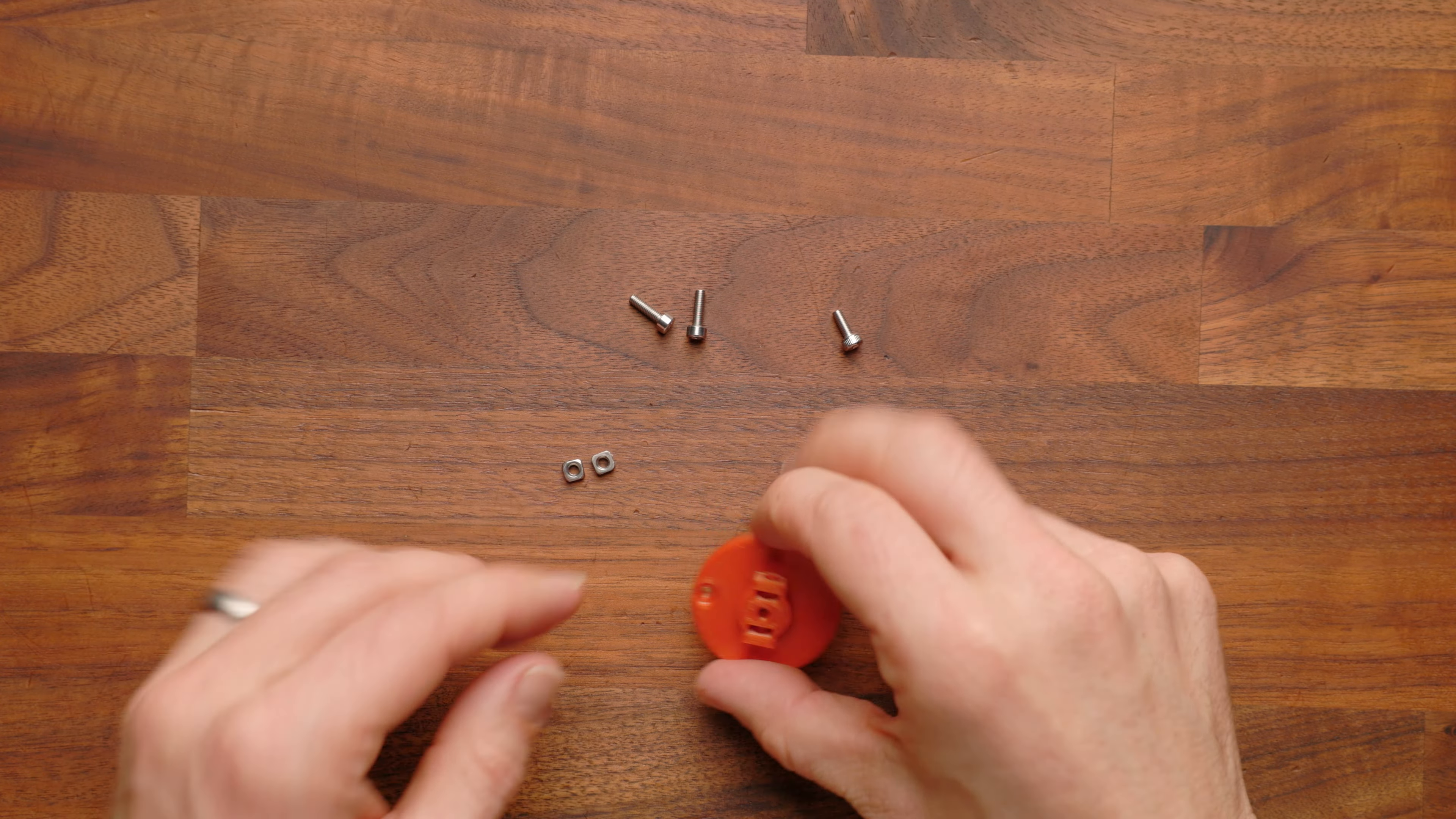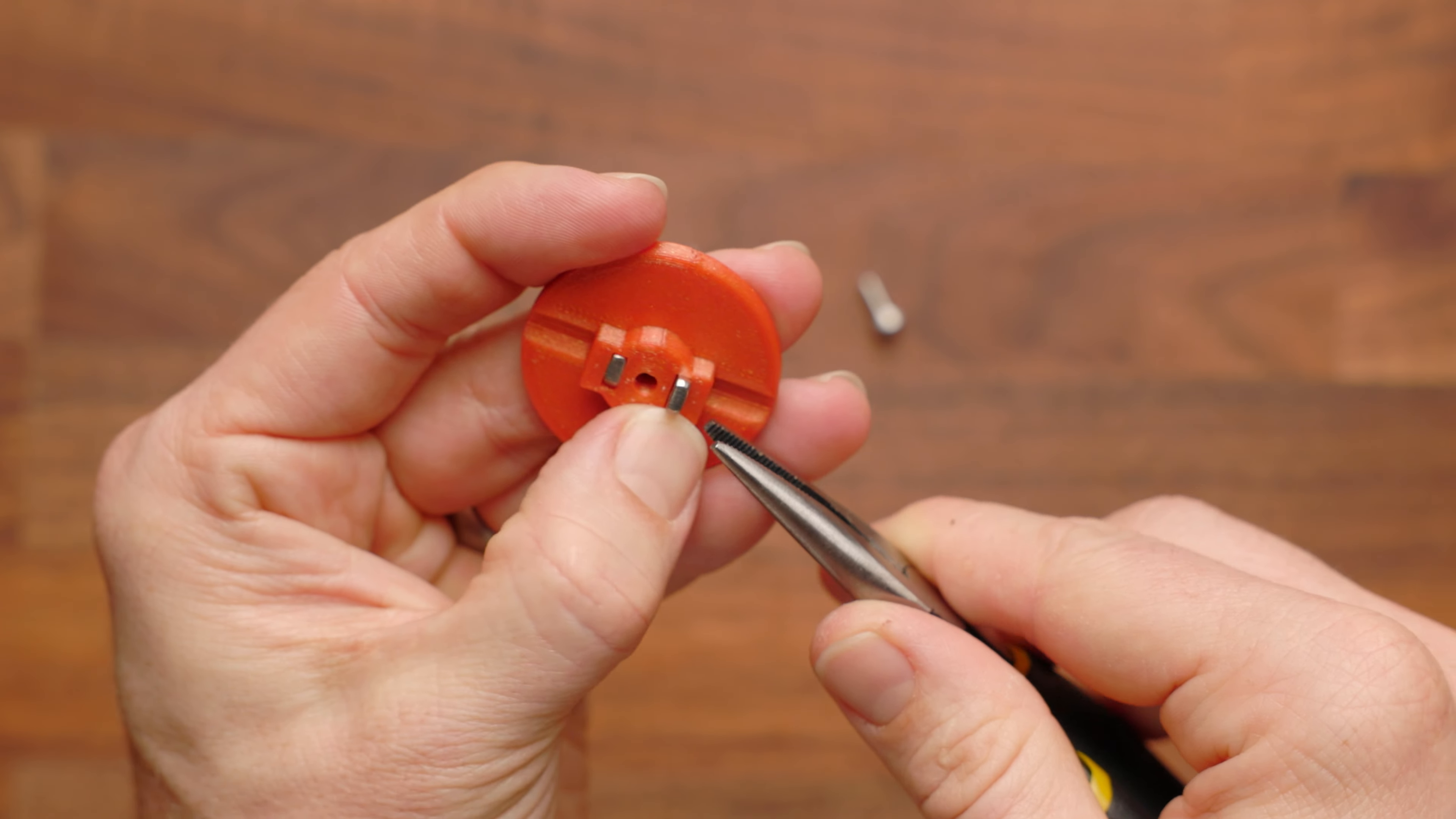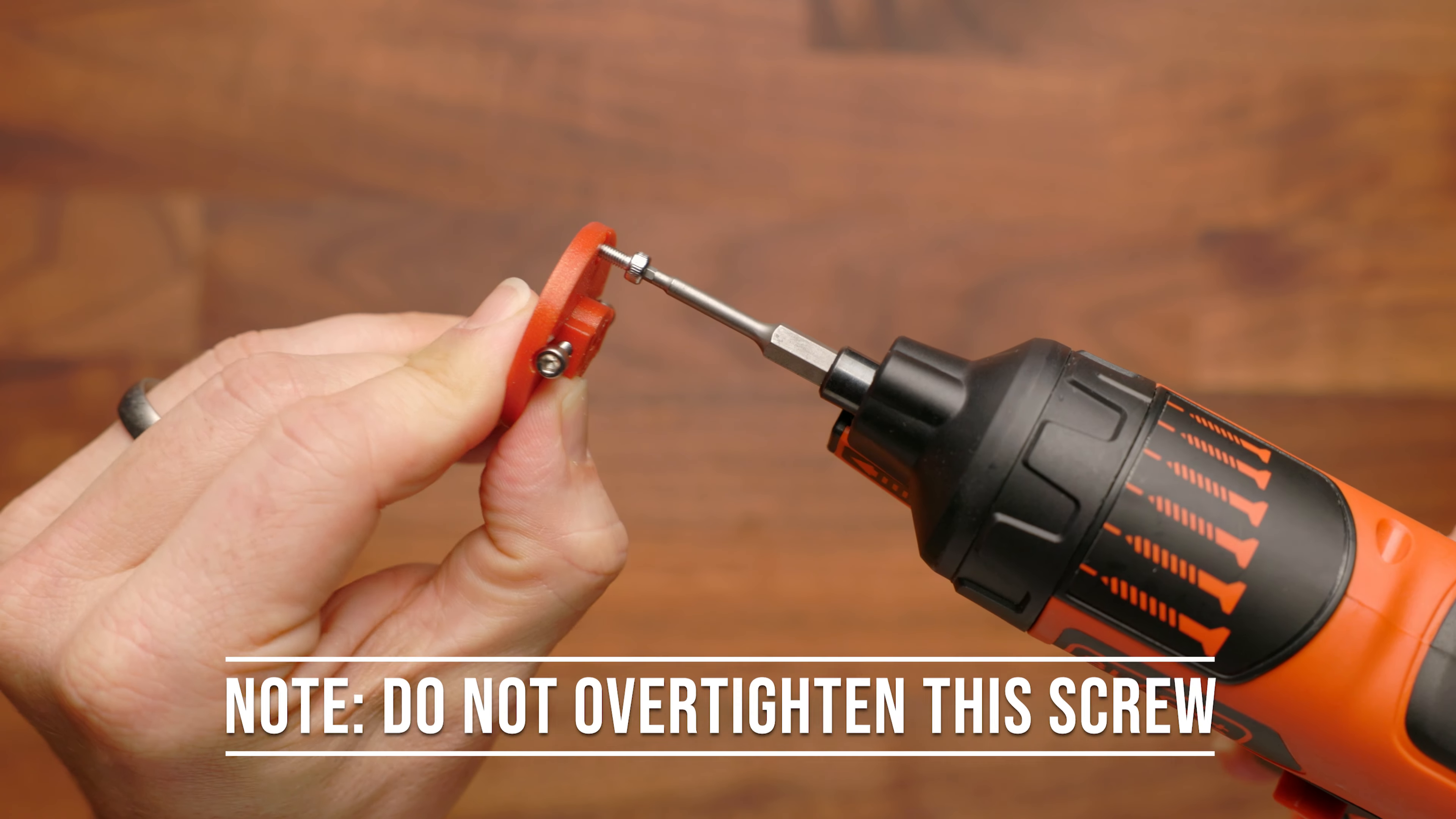Next, we're going to assemble our pusher wheel. You're going to take two square nuts, two M3 by 10, and one M3 by 8. First, you're going to take these square nuts and insert them into the slots on the pusher wheel. Next, you'll take the two 10-millimeter screws and screw them in either side just far enough to hold them in place for now. Last step on the pusher wheel here is to take your 8-millimeter and send it all the way through here.